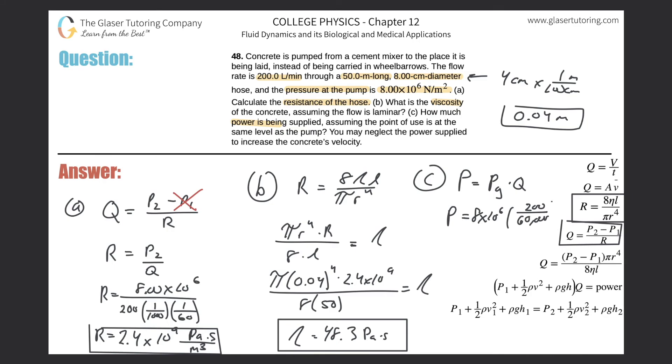All right, so it's going to be 8×10⁶ multiplied by 200, and then divide that now by 60,000. And we get a power of about 2.67×10⁴, and that's in terms of watts.